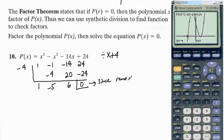So since the remainder is 0, that means p of negative 4 is equal to 0.